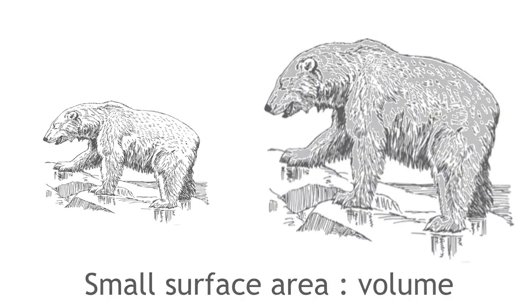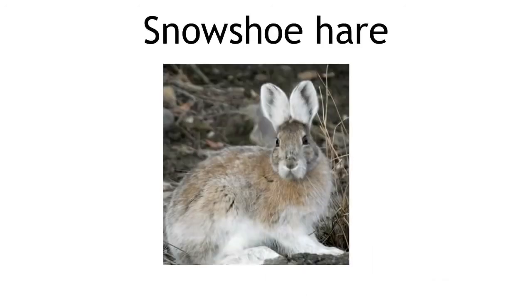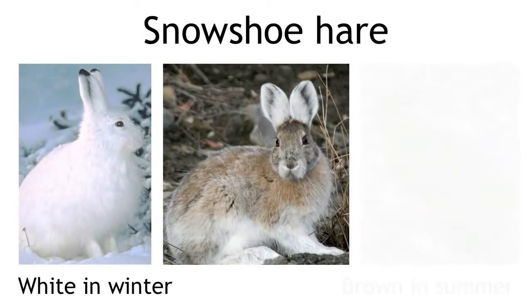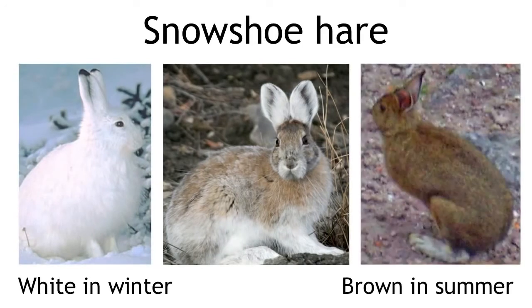Another interesting example of an adaptation is the fur of the snowshoe hare, whose fur changes color. It is white in the winter to hide in snow and brown in the summer to camouflage in grass.